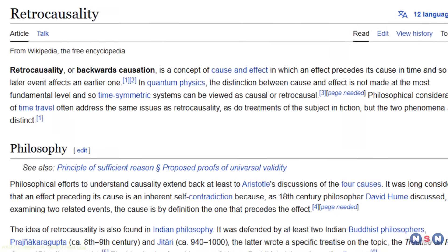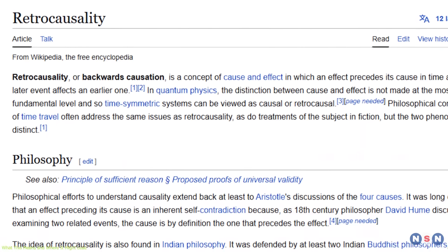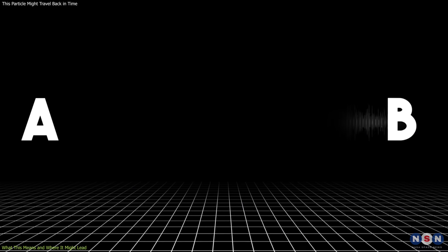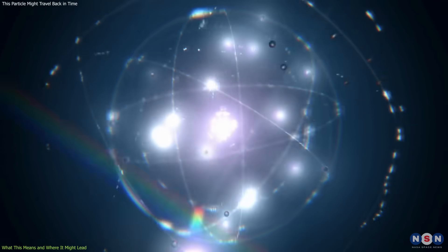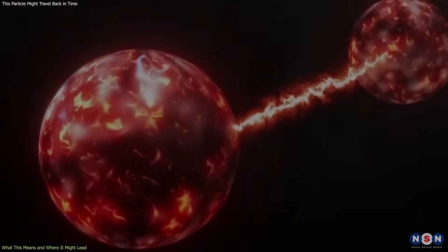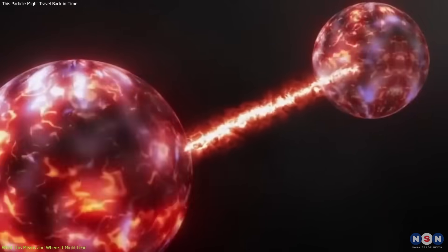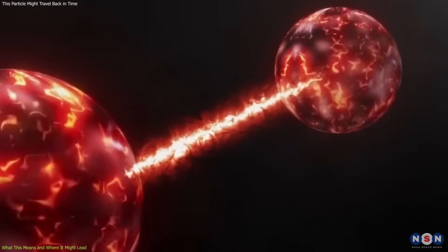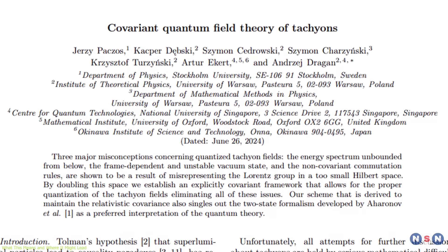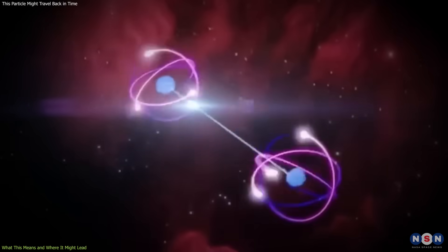One implication is the possibility of retrocausality, where effects can precede causes under specific constraints. Though still controversial, this idea has appeared in several interpretations of quantum mechanics, especially in contexts involving entanglement and weak measurements. The new model provides a relativistically consistent basis to explore these ideas further.